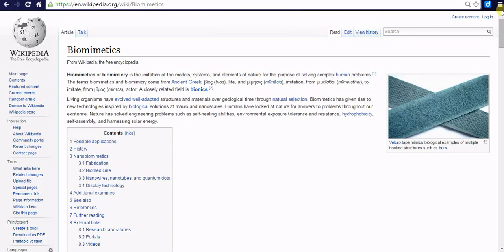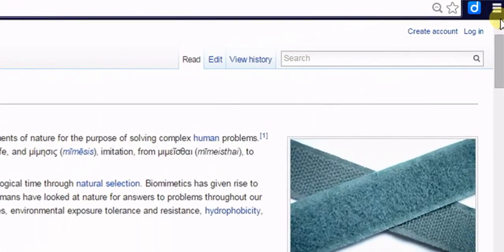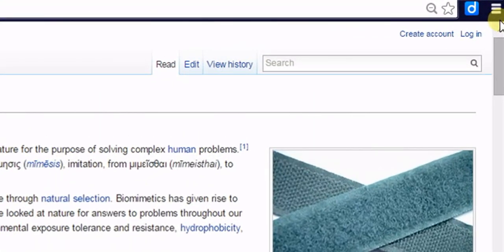First, click on the Diigo icon present on top right hand corner of your browsing window. A menu will open. You will find many options like annotation, save, read later, screenshot, etc.